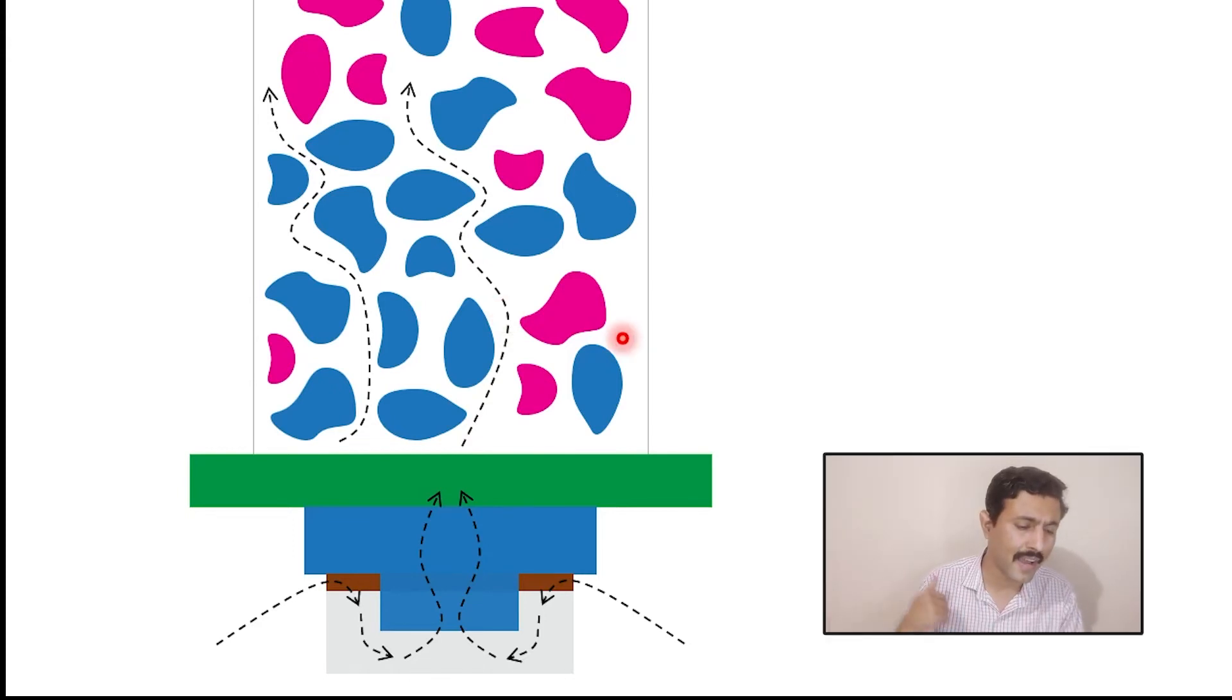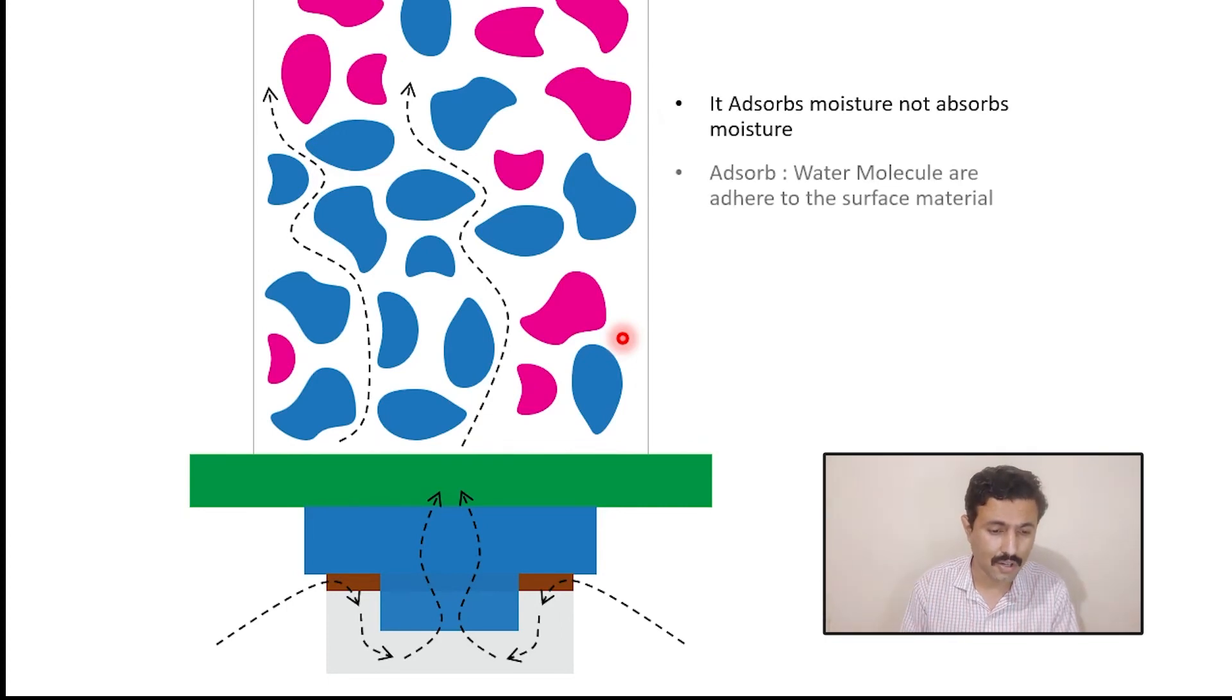Then, followed by this filter, air enters to this cylinder. When air flows through this cylinder, there is silica gel. The moist air flows through the silica gel and this silica gel adsorbs the moisture from the air. Remember that it adsorbs the moisture, not absorbs the moisture. Basically, the meaning of adsorb is the water molecules in the moist air get adhered to the surface material.